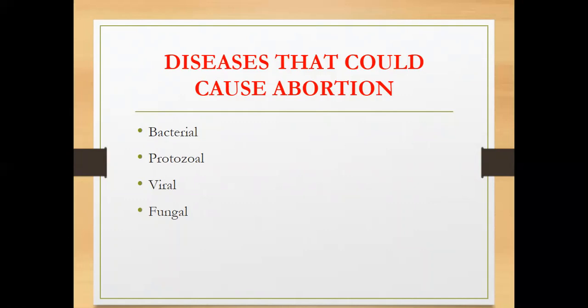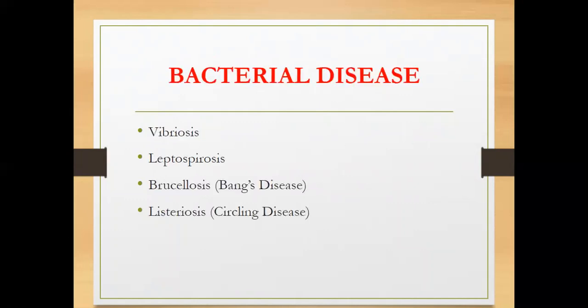The bacterial diseases that cause abortion include vibriosis, which is caused by Campylobacter fetus venerealis. The affected species are cattle, and the effect on reproduction is embryonic mortality — death of the embryo — causing early abortion since it occurs during early gestation. Next is leptospirosis, caused by Leptospira interrogans.